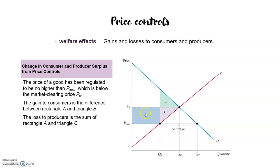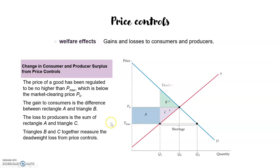The producers are losing A and C. The new producer surplus will be this smaller triangle below p_max and above the supply curve. The triangles B and C together measure the deadweight loss in this regulation after price control.